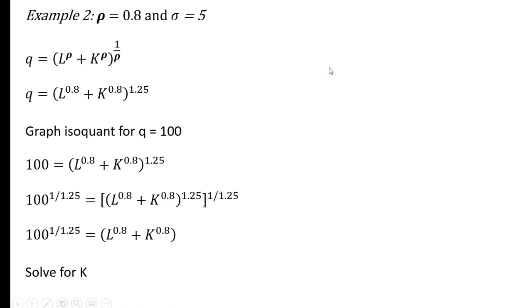Solving for k once again. Subtracting this L to the 0.8 from both sides. Now we're going to raise both sides to the 1.25 power to get rid of this k to the 0.8. We raise both sides to the 1.25 power. And here's our isoquant for q equals 100.